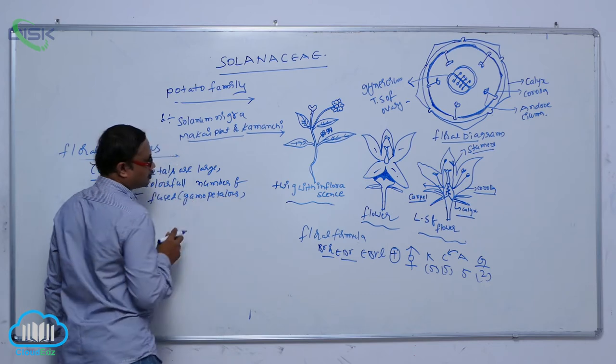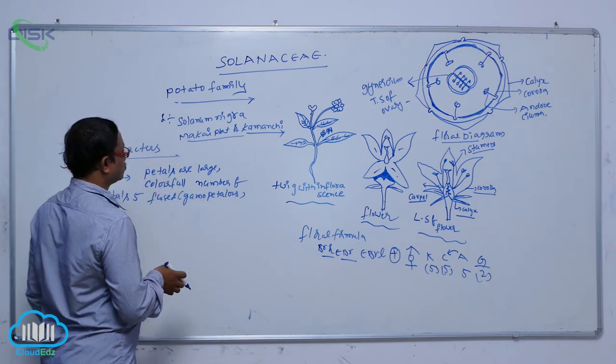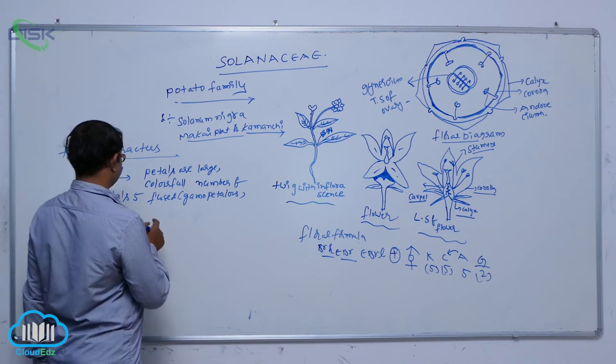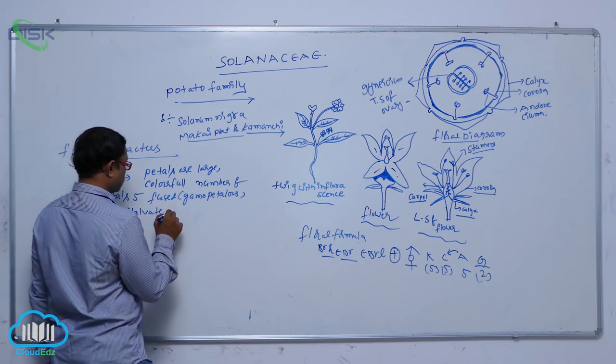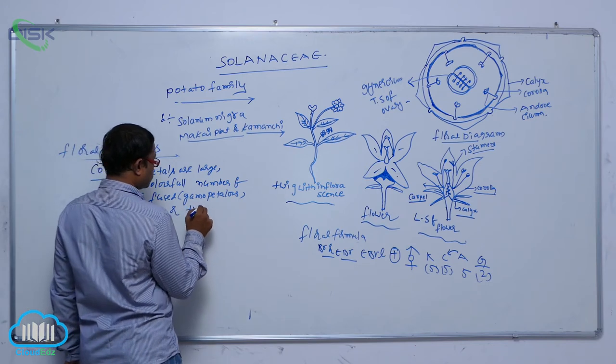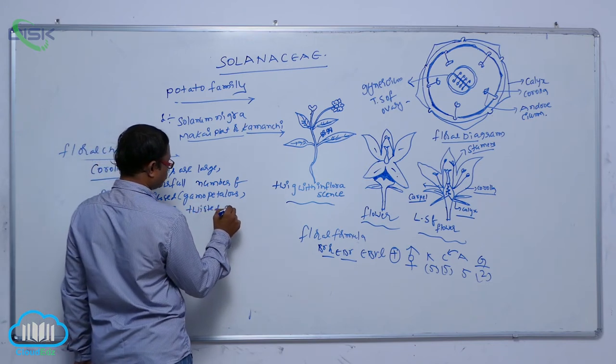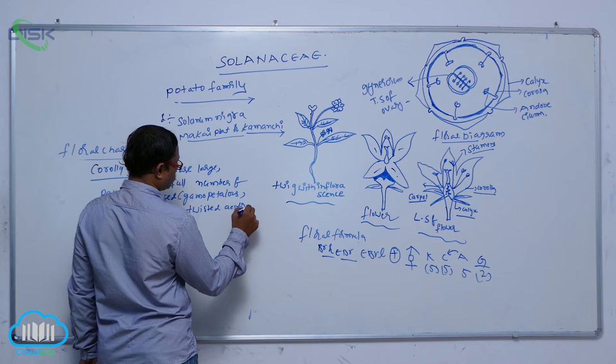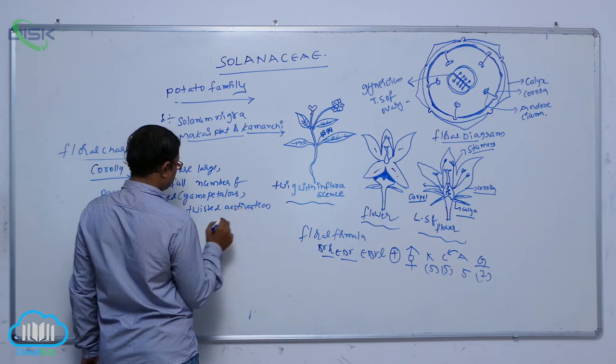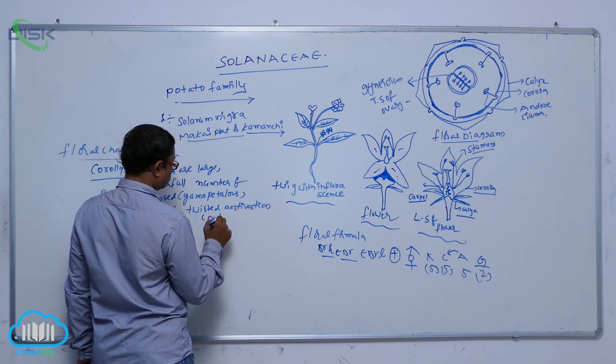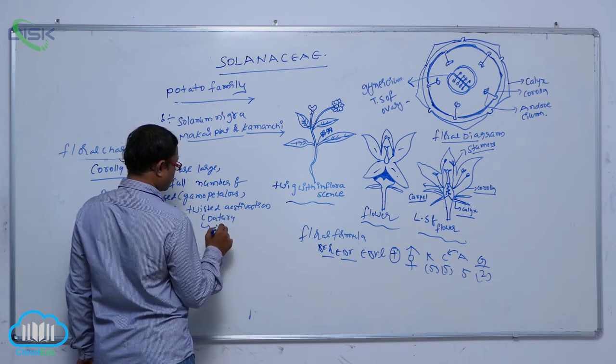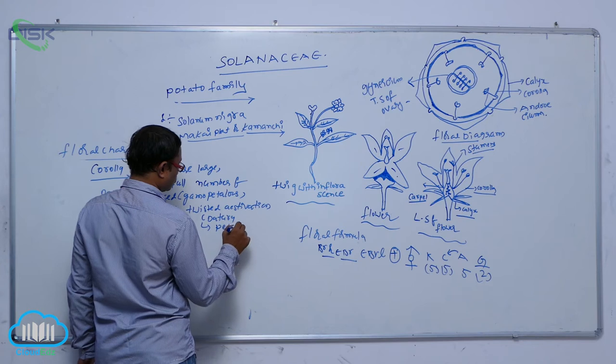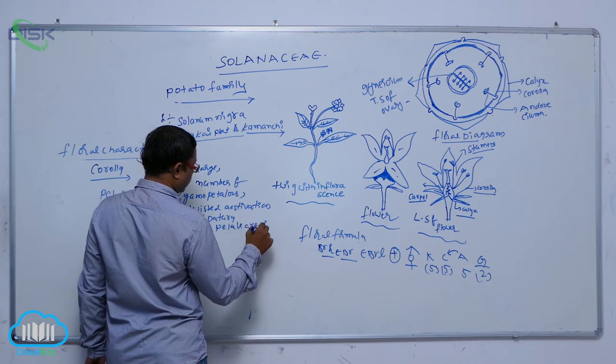Gamopetalous, showing valved or twisted aestivation. In Datura, there is twisted aestivation, and the petals are funnel-shaped.